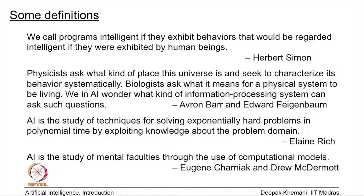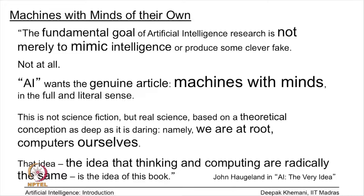The definition I like most comes not from a computer scientist but from the philosopher John Hoagland in the book 'AI: The Very Idea.' He says the fundamental goal of AI is not merely to mimic intelligence or produce some clever fake of intelligence — that is not the goal at all. AI wants the genuine article: machines with minds of their own, in the full and literal sense.